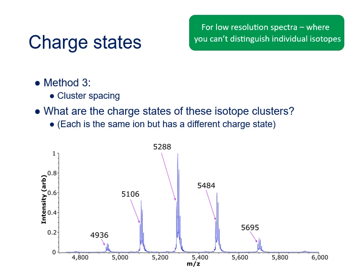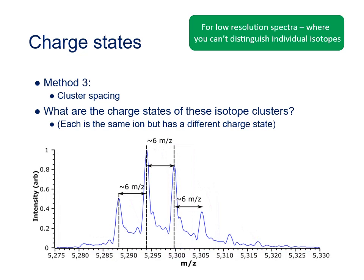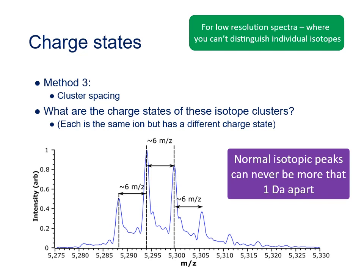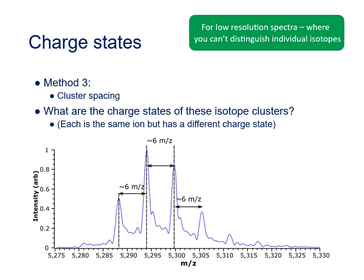You have to use a very different method to work out the charge state of ions when you can't see the isotopic distribution in the spectrum. To explain what I mean, let's have a look at this large peak. Zooming in like this we can see that there are a series of regularly spaced peaks in this cluster, but it can't be an isotopic distribution because these peaks are six Daltons apart, not one Dalton apart or less. So if this isn't an isotopic distribution, well what is it? In fact, each one of these individual peaks is the envelope of an isotopic distribution, and the different peaks correspond to compounds that have different masses — in this case there is a regular mass difference between them, perhaps implying a regular addition of some adduct onto a larger molecule. Now in order to work out what these adducts might be, we need to know their mass, and in order to know the mass we need to know the charge state that these ions are in.